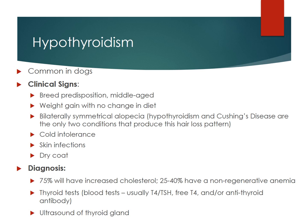You'll see weight gain with no diet changes. We'll see this obese patient and think the owner is overfeeding, but come to find out they're feeding the right amount and there's been no change, but all of a sudden there's extreme weight gain. They'll also notice a hair loss pattern — bilateral alopecia — on each side of the dog, usually around the flank area. The patient is also going to be cold intolerant, you may see some skin infections, and their coat is going to be quite dry with some flaky skin.